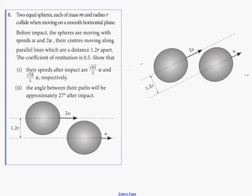Two equal spheres, each of mass m and radius r, collide when moving on a smooth horizontal plane. Before impact, the spheres are moving with speeds u and 2u. Their centers are moving along parallel lines which are a distance 1.2r apart.